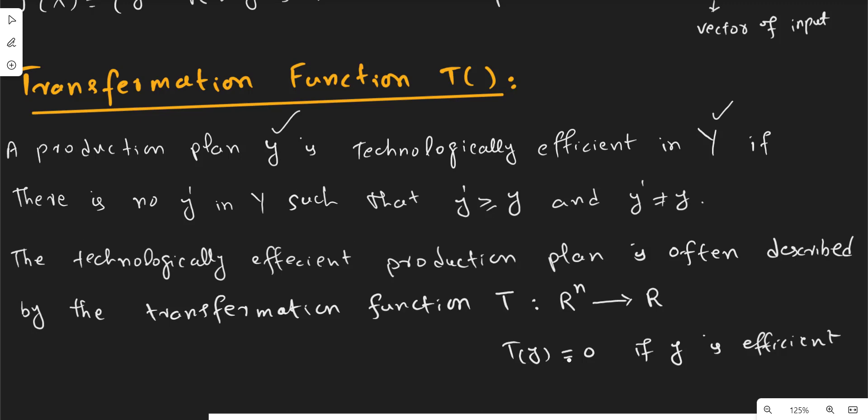When you reach the most efficient production plan y, transformation becomes zero - no further transformation can be done. This whole process of optimization is captured by the notion of the transformation function. Thank you for watching.